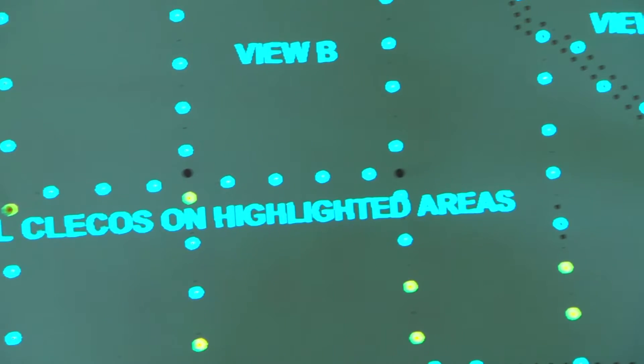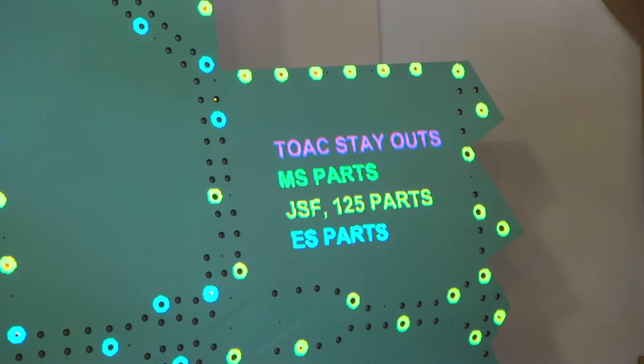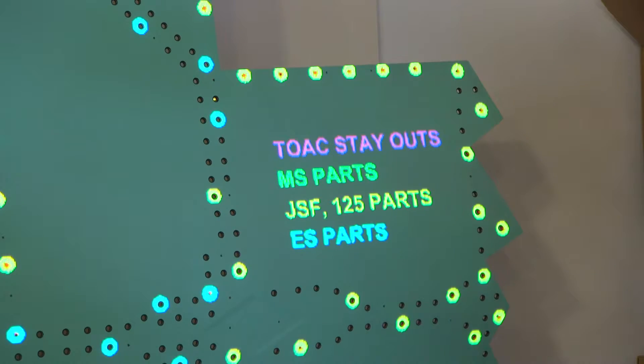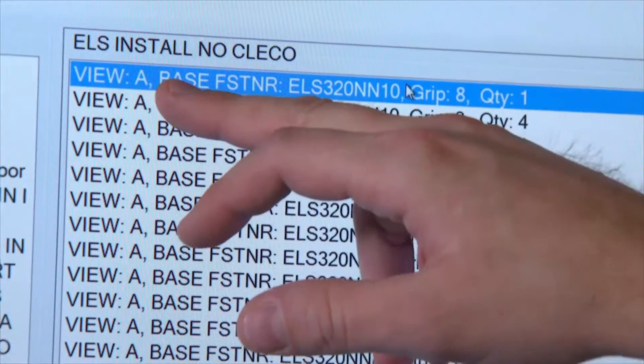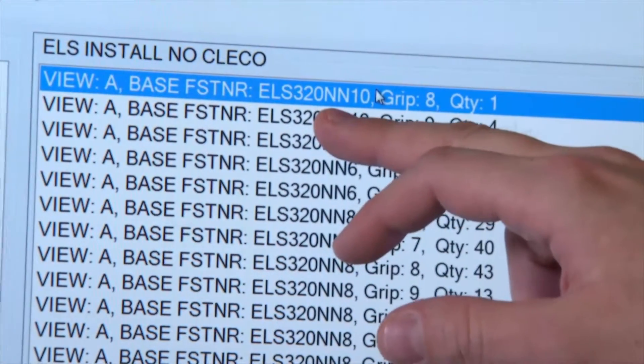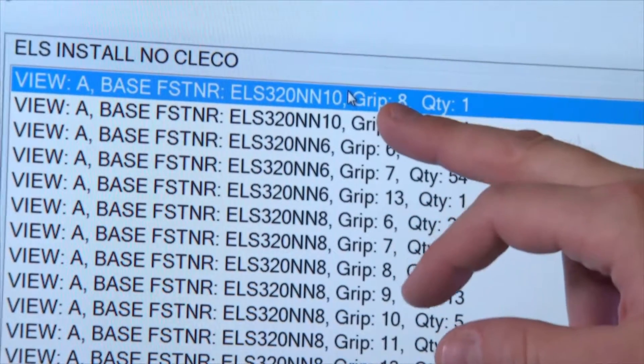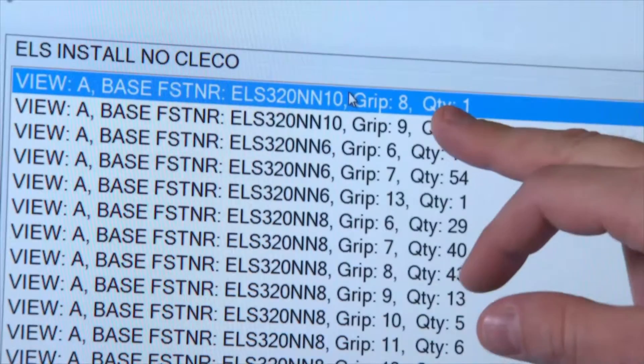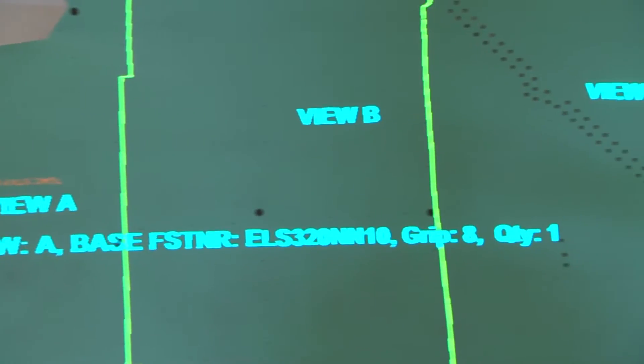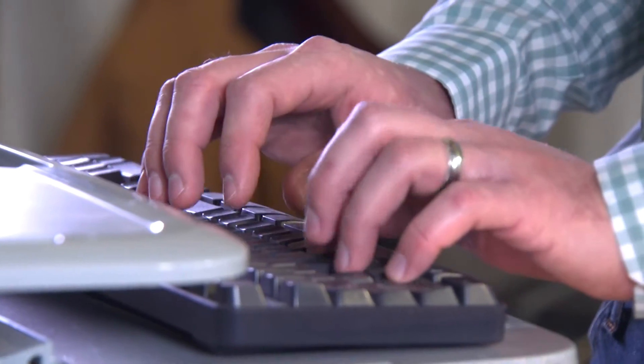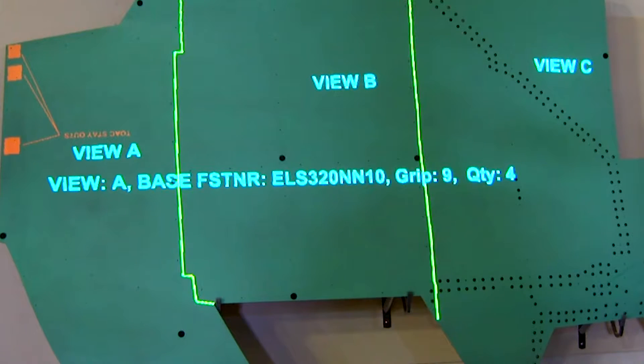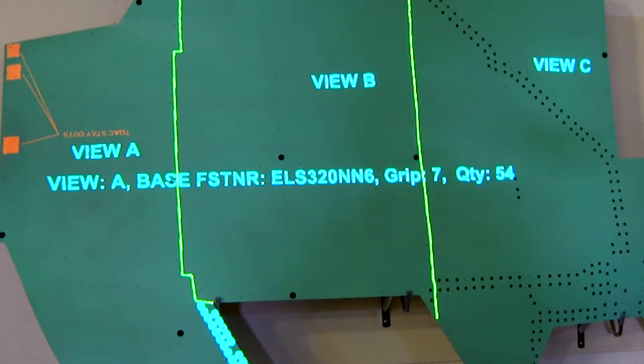And you can see there's a number of different colors. And then on the right-hand side, we publish a legend that describes what those shapes and colors represent. So here we have a base fastener ELS-320 NN-10 with a grip length of eight, and there's a quantity of one. And that's what's shown on the aircraft right now. And as the operator moves down the list, the items shown on the aircraft change based on this sort string.